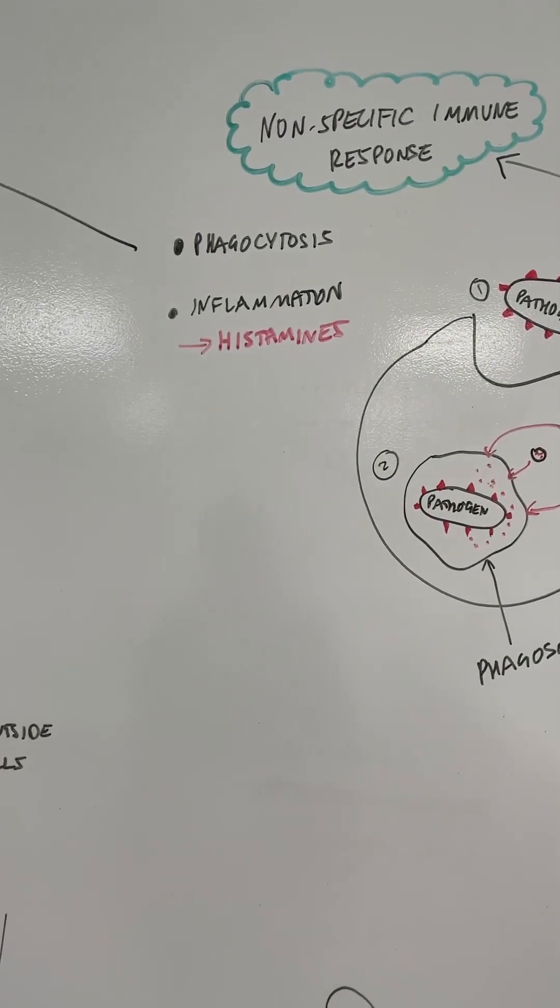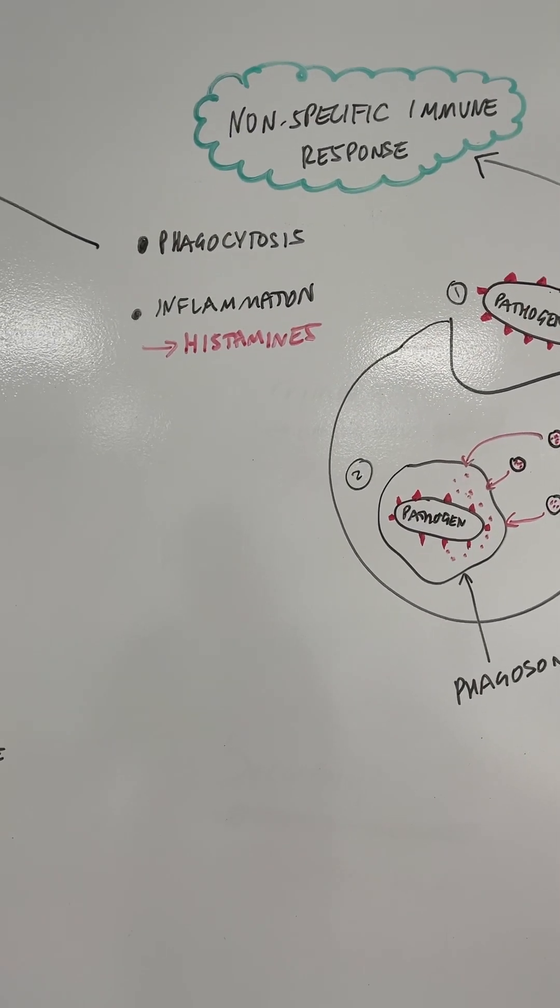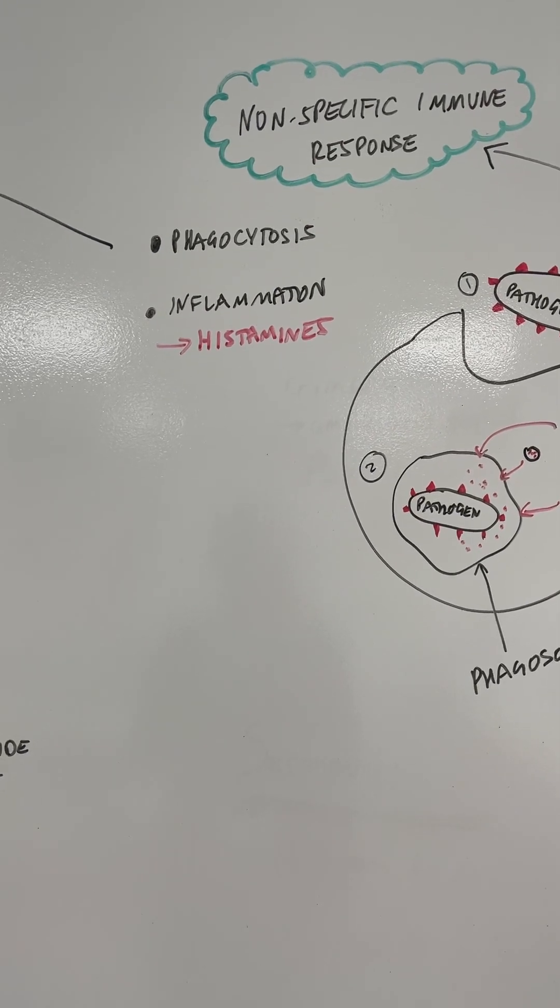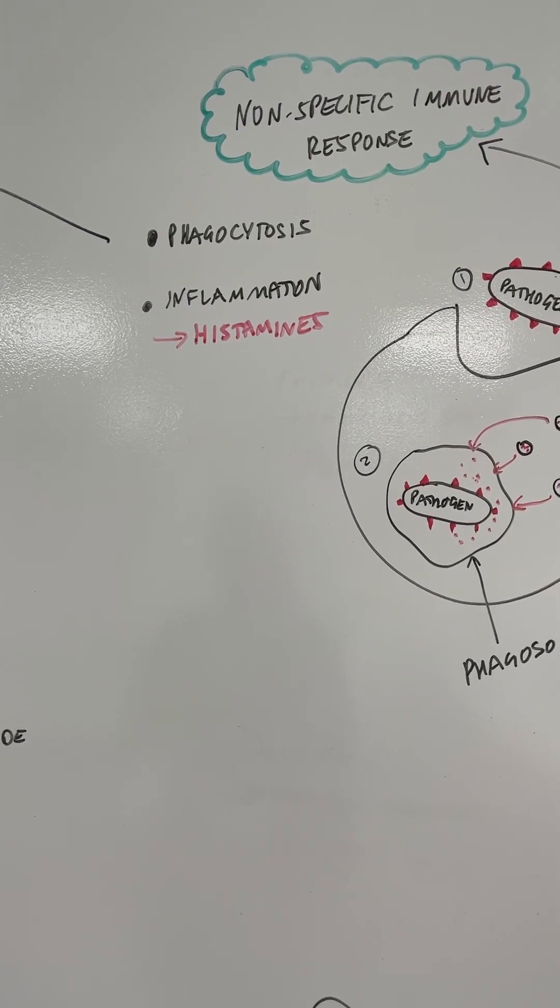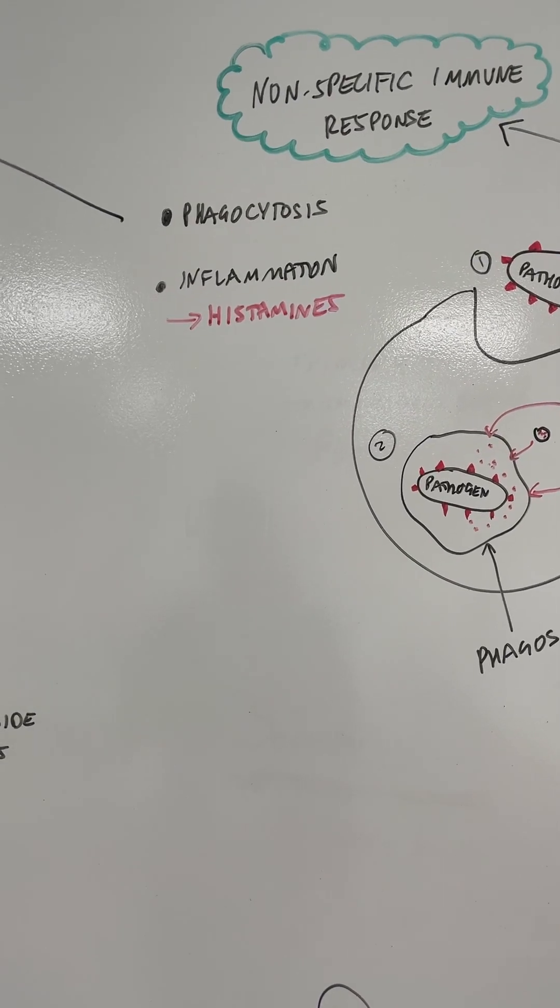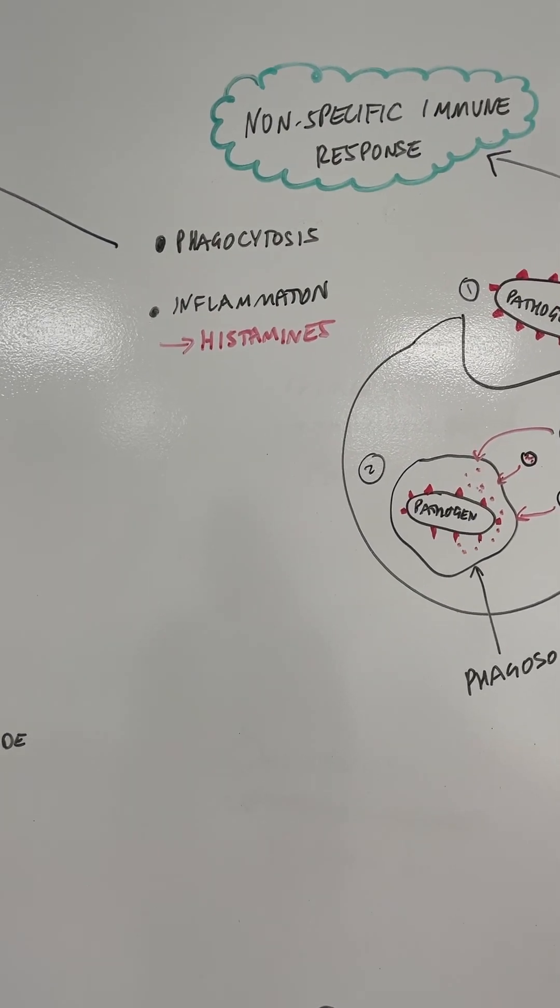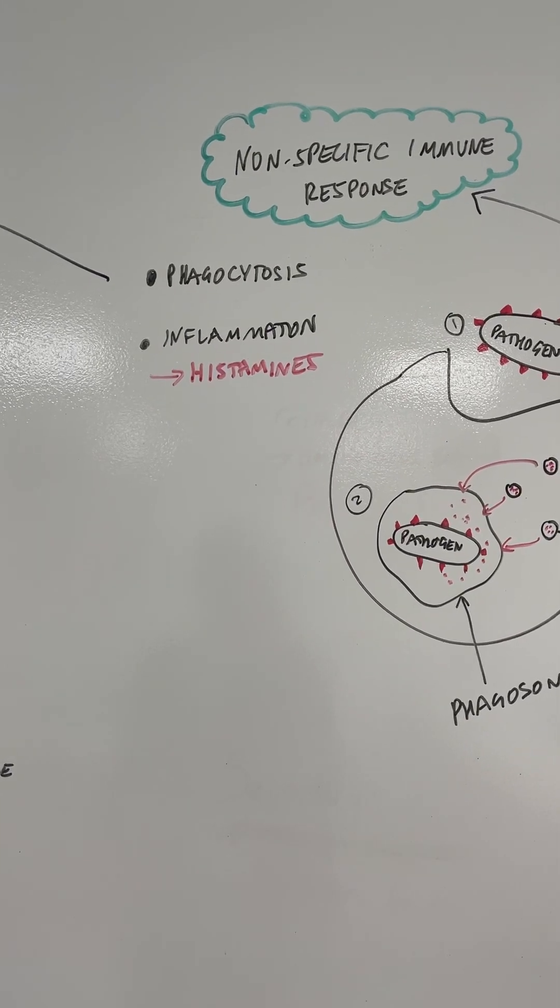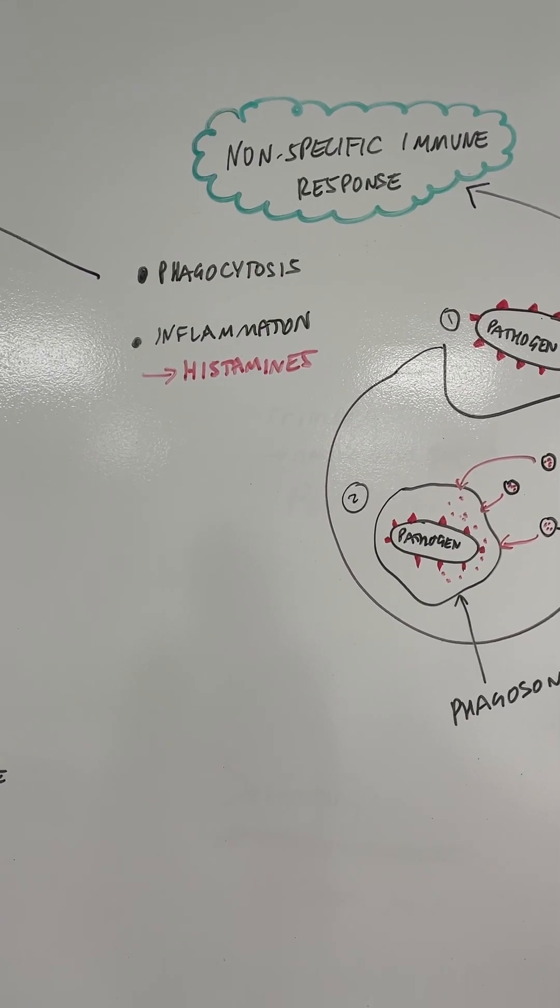You can also have the inflammatory response, inflammation where histamines are released, you get swelling, the capillaries become leaky at the area, it gets hot. This is what typically happens when you get something foreign inside your body, and it's a quick way of encouraging the white blood cells to fight it off there.